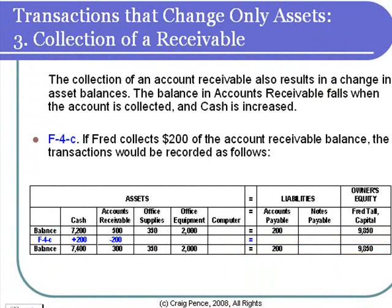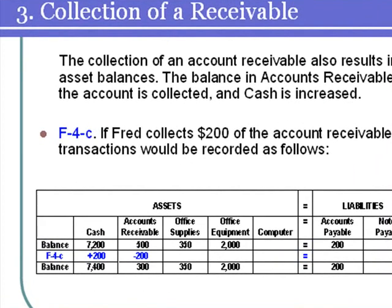We're now collecting some of the accounts receivable balance that we've carried forward from the transaction in which we provided services to the customer on account. When the accounts receivable is collected — in this case partially collected — we'll need to increase cash to record the collection of the payment, and then reduce accounts receivable. Our customer did owe us $500, but now our customer will only owe us $300.